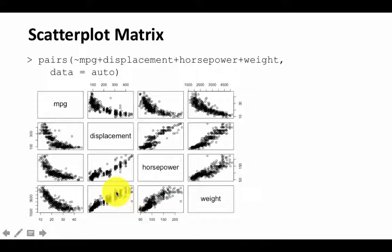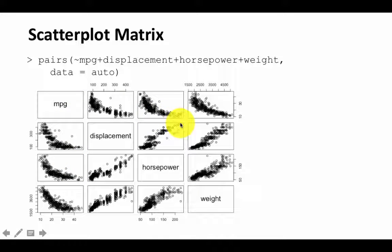All of this is to be expected. An engine with a bigger displacement will have a bigger volume, and therefore it's likely to be heavier as well. So again, we are able to see many variables and we are able to make comparisons.